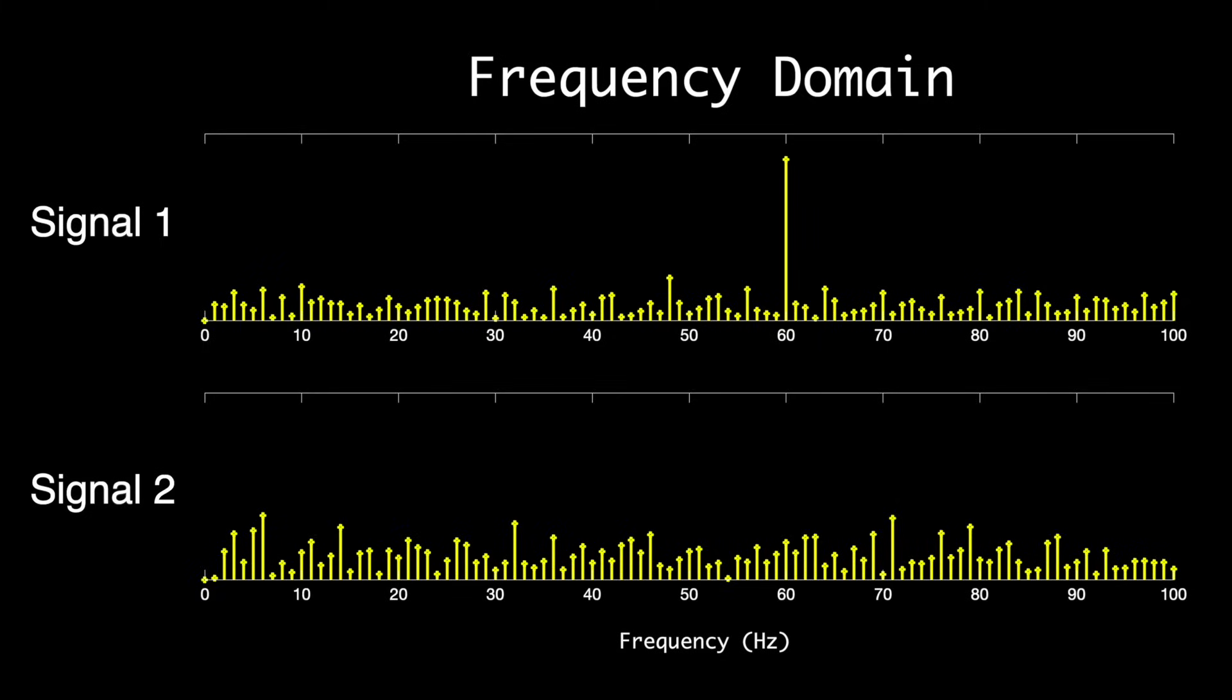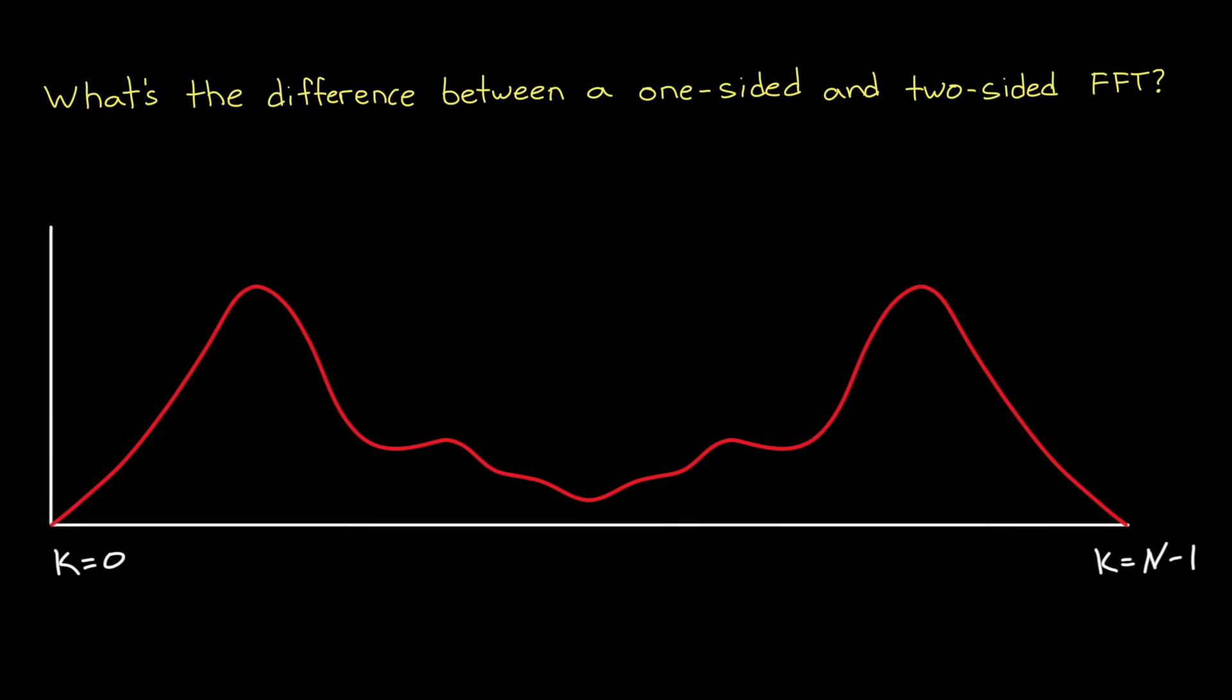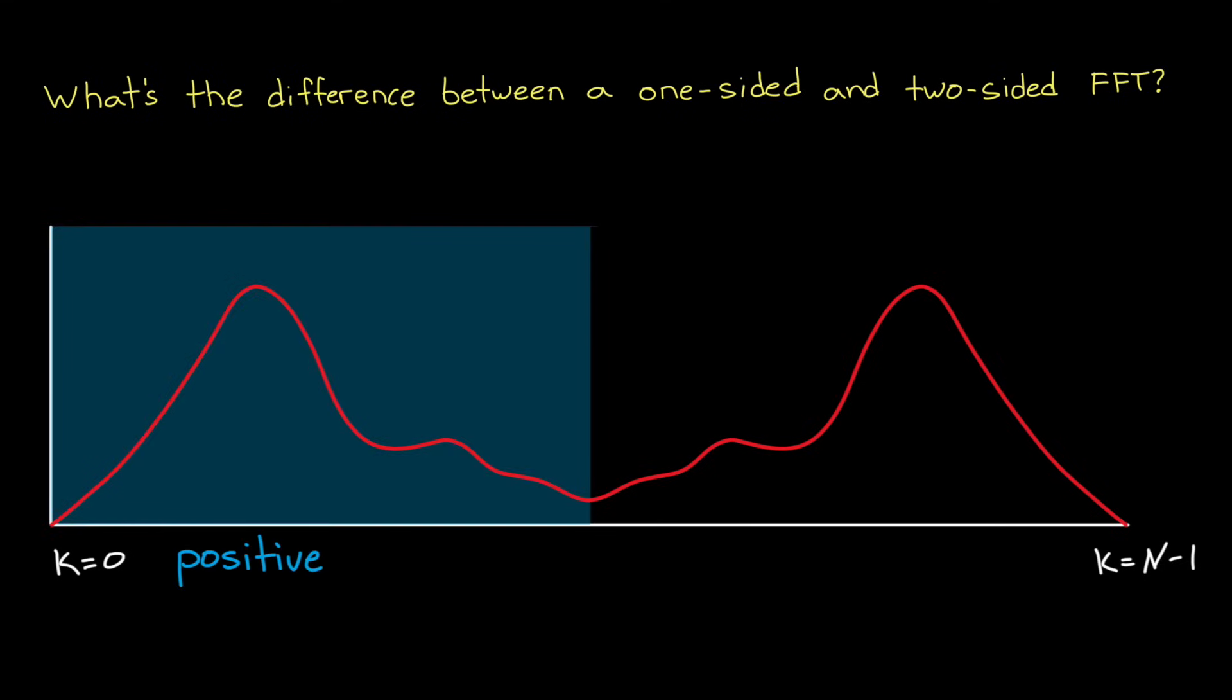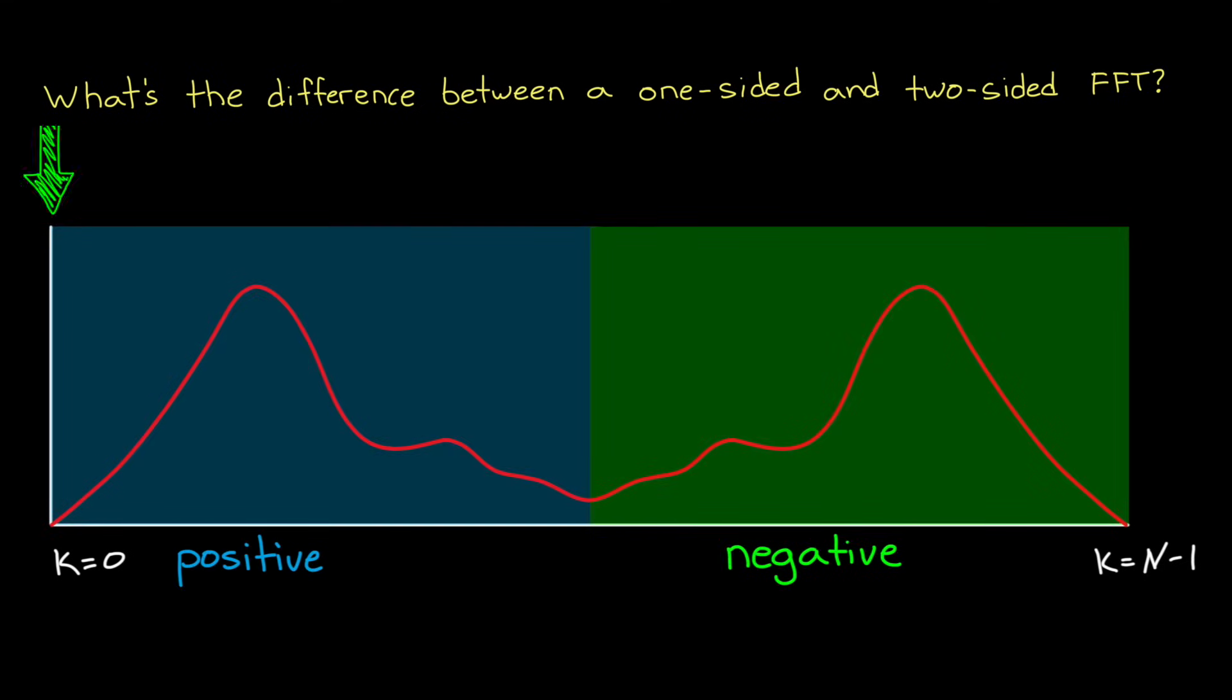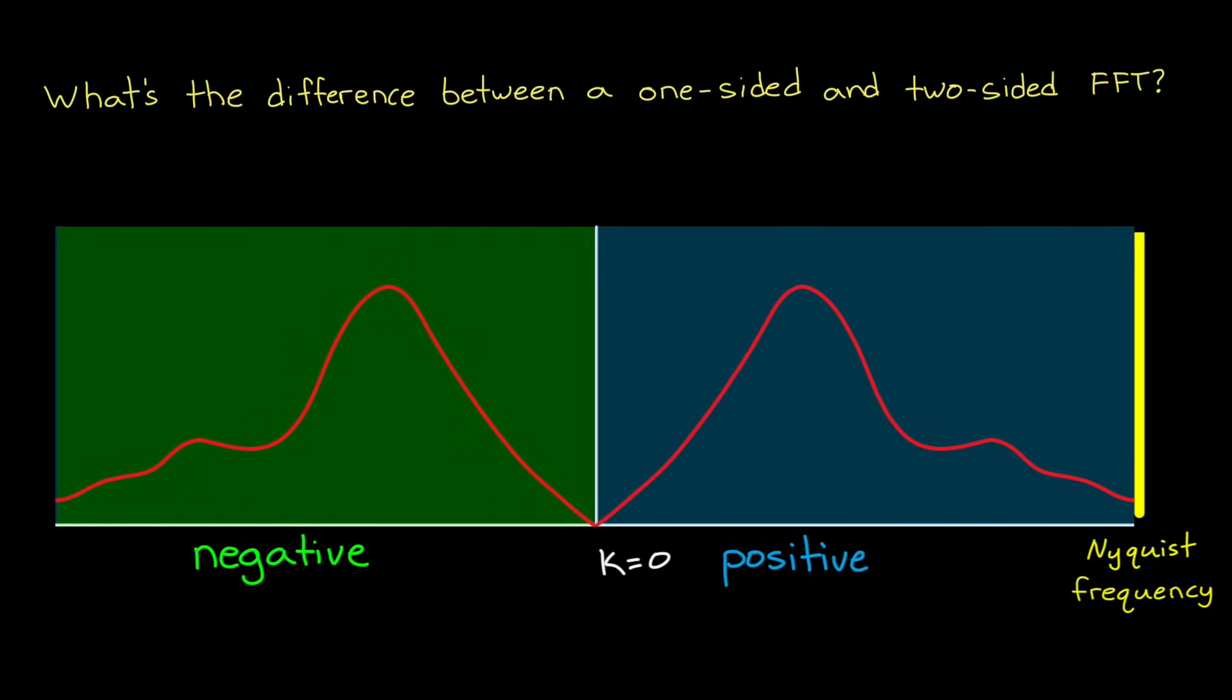So for the next question, I want to talk about what the difference is between a one sided and two sided FFT. The answer involves understanding that the FFT returns both the positive and the negative frequencies, so two sides. And if you take the FFT starting at k equals zero and go up to k equals n minus one, then the positive frequencies are on the left, and the negative frequencies are on the right. And the Nyquist frequency is the boundary between the two. This is based on the Nyquist sampling theorem, which states that we can only know signal information up to one half of the sampling rate. Now, sometimes it's helpful to shift the FFT such that the negative signals are on the left and the positive are on the right, but it's not necessary as long as you understand which are negative and which are positive.